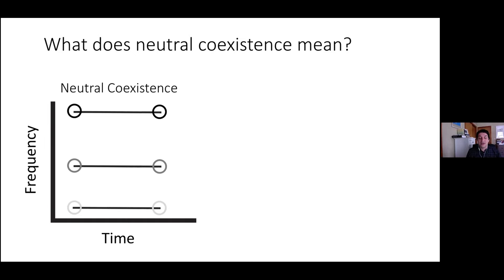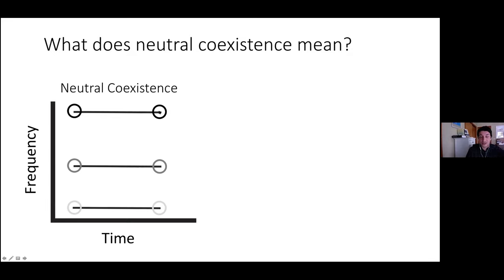Let me first address the neutral coexistence hypothesis. What we would expect under neutral coexistence is that the frequencies of two coexisting species remain approximately constant relative to the original inoculation frequency. If you mix two species in pairwise culture under neutral coexistence, inoculating one at high and one at low abundance, they would remain roughly as they were — variation arising only from stochastic dilution and growth processes.